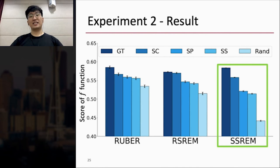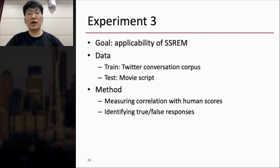And the third experiment is showing applicability of SSREM. I use Twitter Conversation Corpus as training data and test the model on movie script. This is because the movie script is written by the script writers, whereas Twitter is personal, casual, online conversation. And I run two experiments that are the same as experiment number one and two with different test corpus.